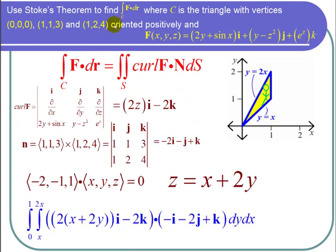So I can say that the surface integral is equal to the double integral, x equals 0 to 1, y equals x to y equals 2x. And then we have the curl of f. So that was 2zi. And z is x plus 2y. So I get 2 times (x plus 2y) times i. Then minus 2k. So there's my minus 2k. Dotted with.